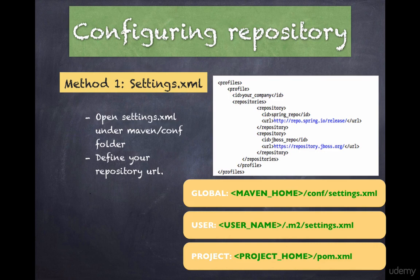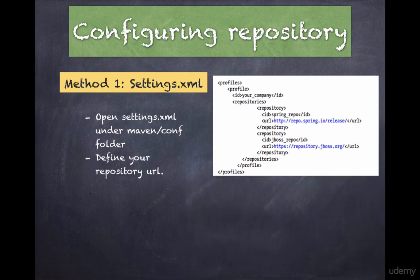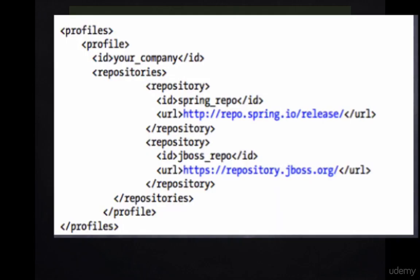For example, chapter 31 pom.xml. In order to add a new repository, you need to modify the settings.xml. There are two places you can change your settings.xml — we'll be going over the two methods that are widely used. The screenshot here shows Spring and JBoss repositories added to the settings.xml.